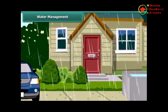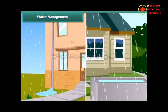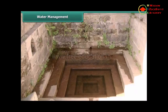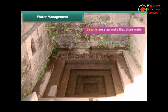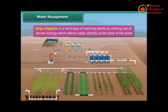If we collect and store all the rain water that falls on terraces, roads and pavements, instead of letting it run into the ditches, we could actually have vast reserves of water. Collecting, storing and conserving rain water is called rain water harvesting. Bavari, the traditional way of collecting water, can be revived. Bavaris are step wells that store water, which can be reached by descending a few steps, and can also be multi-storied. A farmer can use the drip irrigation system — a technique of watering plants using narrow tubings that deliver water directly at the base of the plant — to conserve water.